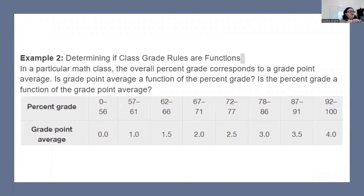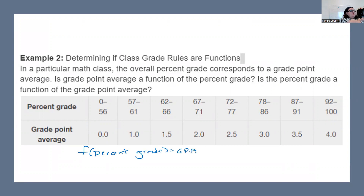Determine if class grade rules are functions. In a particular math class, the overall percent grade corresponds to a grade point average. Is grade point average a function of the percent grade? We write: function of percent grade equals GPA. Does each percent grade have its own GPA? Yes — if you're between 0 and 56, that's 0.0; 67 to 71 is 2.0. It's not going to two different ones. So yes.